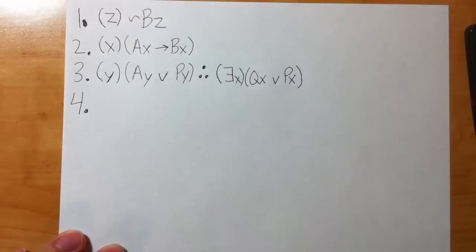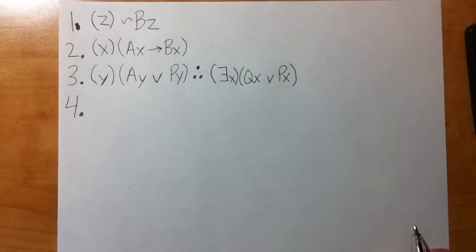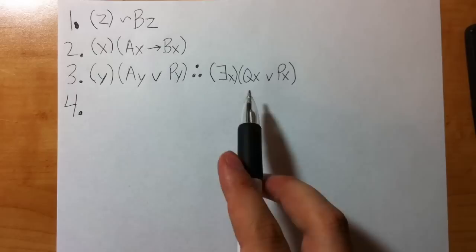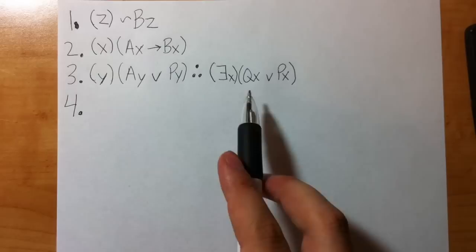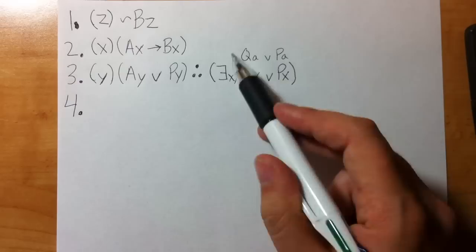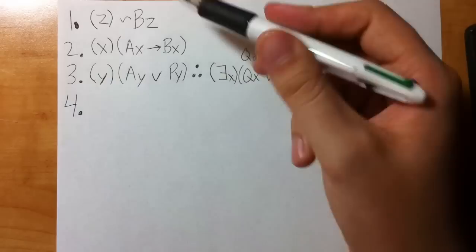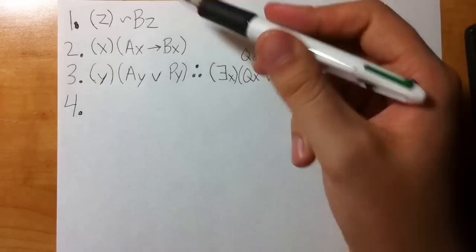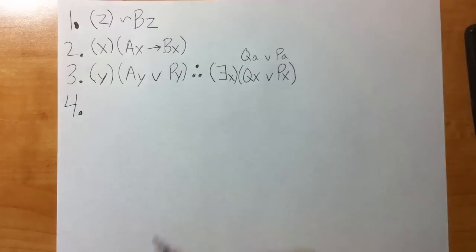Let's try a practice problem. I recommend pausing and working it out yourself. When you have an existentially quantified conclusion, I always write a note to myself: if I can get the unquantified instance, I can use EG to turn it into the conclusion. I see three universally quantified premises, so there's about to be a lot of UI. I'll work top to bottom: tilde BA — nothing changes when a tilde is introduced, it's still standard UI, line one UI.